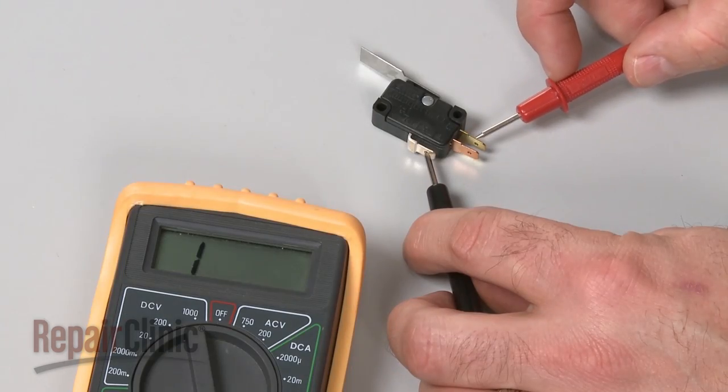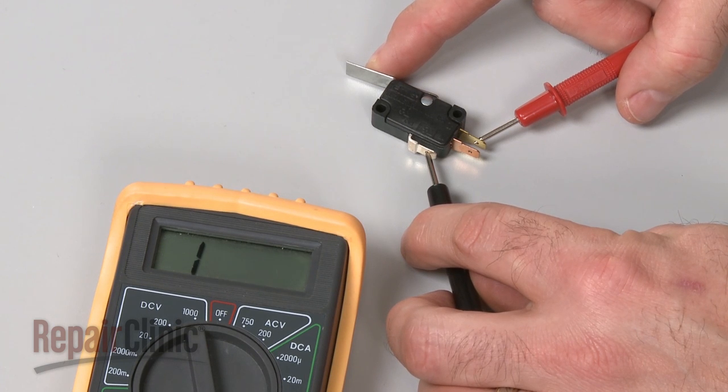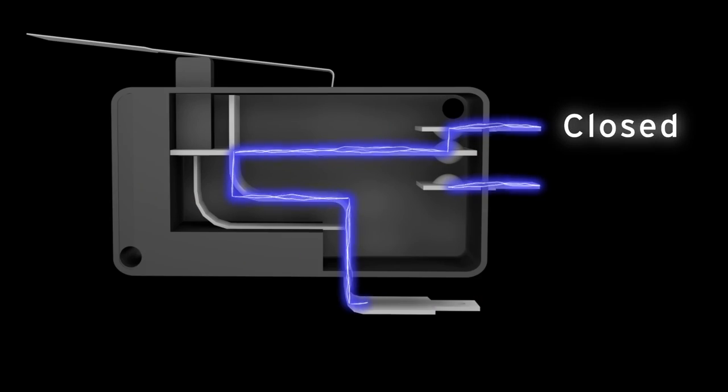Repeat the test for the normally closed terminal to determine if it has continuity. Keep in mind that the normally closed terminal should only provide continuity before the switch has been actuated.